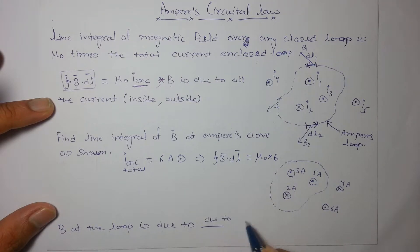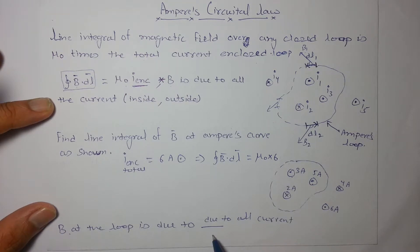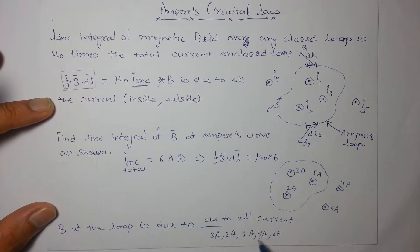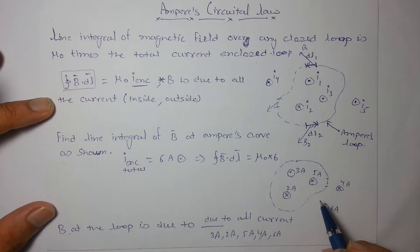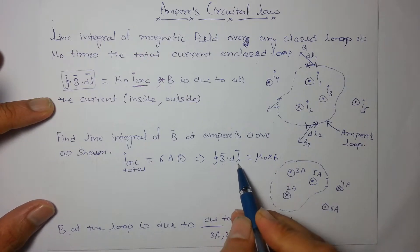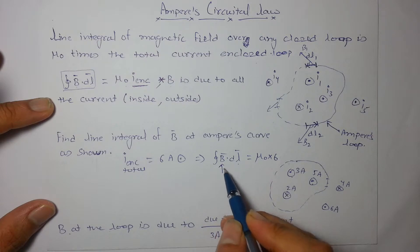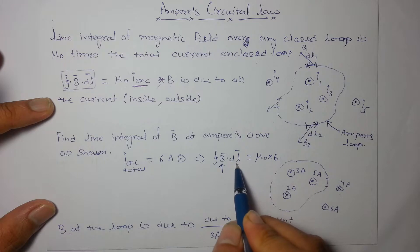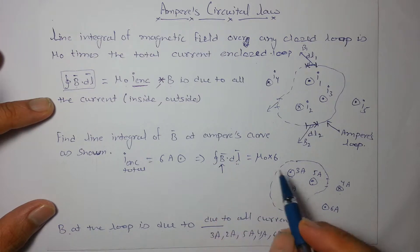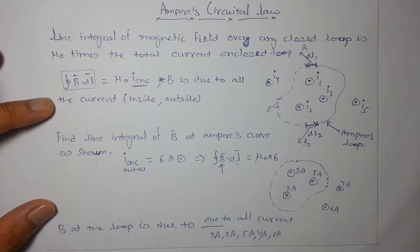The magnetic field on the loop is due to all currents — whether 3 ampere, 2 ampere, 5 ampere, 4 ampere, or 6 ampere — both outside and inside currents contribute to the net magnetic field on the Ampere's loop. However, the value of the line integral over the complete closed loop is decided only by the currents inside the loop.